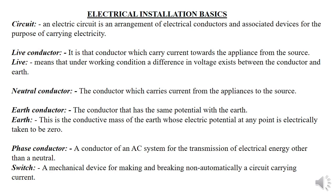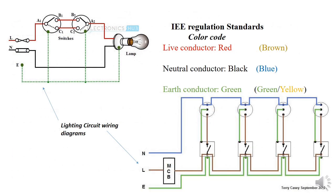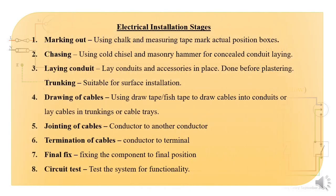The earth ensures there is no excess current going to the circuit — it disposes of excess current. You also need to understand the color codes. In Kenya we use British Standards guided by the IEE Regulations: red for the live, black for the neutral, and green with yellow stripes for the earth. In other countries like Germany they use brown for the live, blue for the neutral, and yellow-green for the earth.